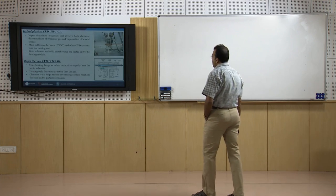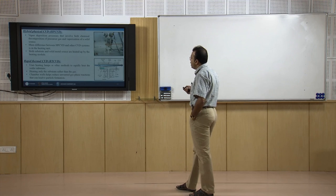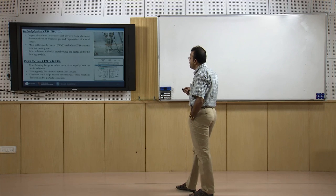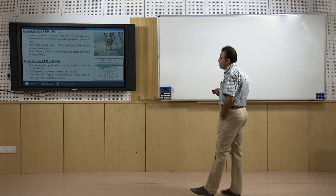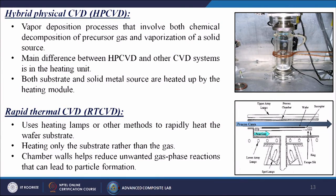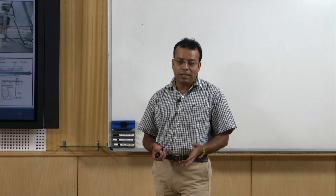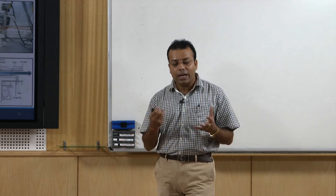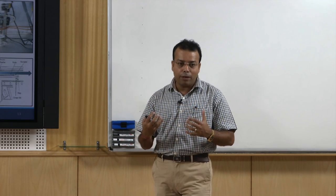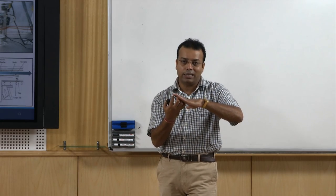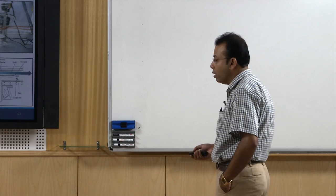Hybrid physical CVD (HPCVD) involves both chemical deposition of precursor gas and vaporization of a solid source; the main difference from other CVD is the heating unit — both substrate and solid metal source are heated by the heating module. Rapid thermal CVD (RTCVD) uses heating lamps to rapidly heat only the wafer substrate rather than the gas chamber walls, which helps reduce unwanted gas phase reactions that can lead to particle formation. In RTCVD, the substrate itself is made reactive to directly react with gases and form coatings.